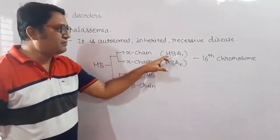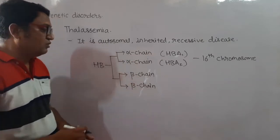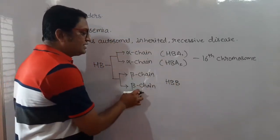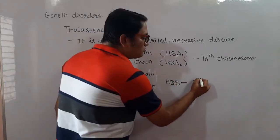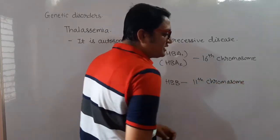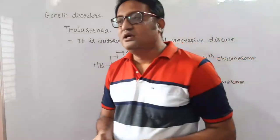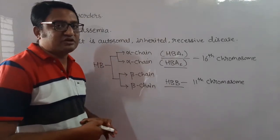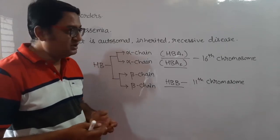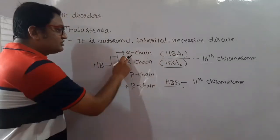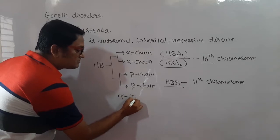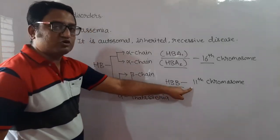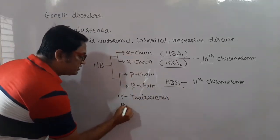On the 16th chromosome, two genes named HbA1 and HbA2 produce the two alpha chains. The beta chains are controlled by a single gene named HbB, located on the 11th chromosome. If there is a defect — mutation or deletion — in HbA1 or HbA2, alpha chains are not formed, causing alpha thalassemia. If the defect is in HbB on the 11th chromosome, beta chains are not formed, causing beta thalassemia.